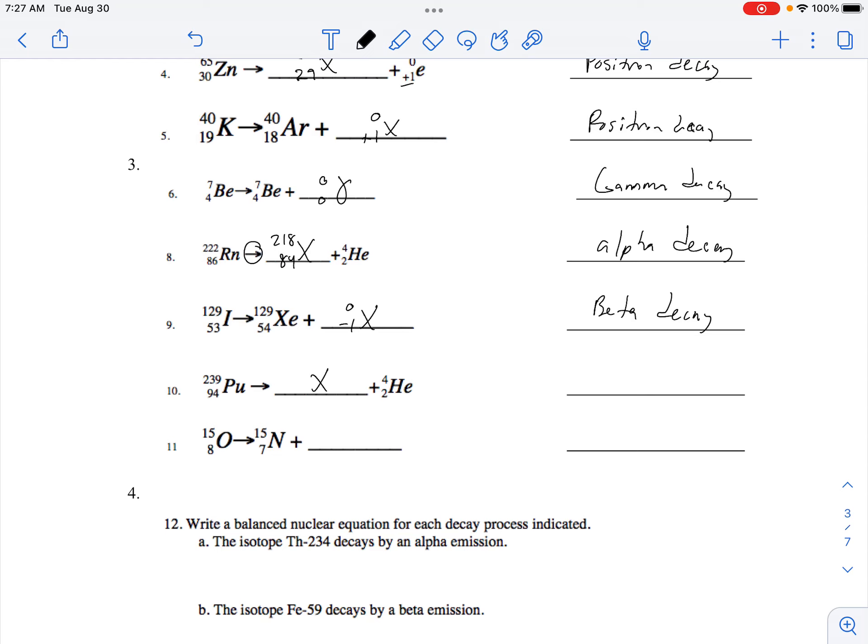This one would be, what plus four gives you 239? This would be 235 and 92. Uranium plus alpha decay.